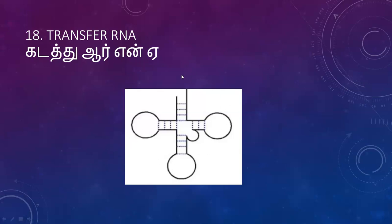The arms of tRNA include: the variable arm, anticodon arm, and dihydrouridine (D) arm. These are the structural components of tRNA.